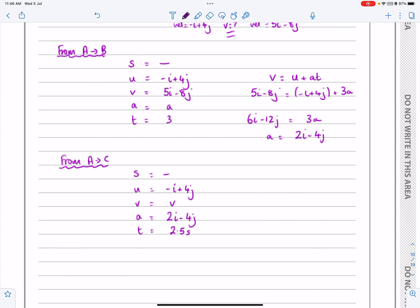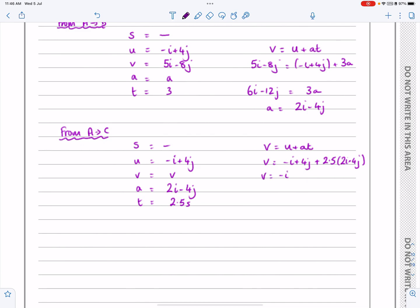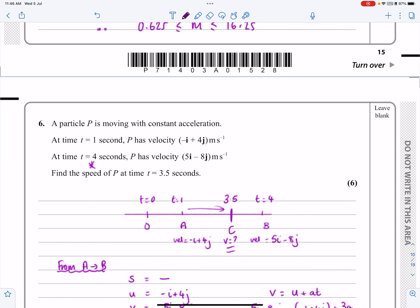This time I'm trying to work out V, still using U, V, A, and T, so it's the same formula. V equals U plus AT. V equals minus i plus 4j plus 2.5 lots of 2i minus 4j. This works out to minus i plus 4j plus 5i minus 10j. So V is 4i minus 6j. That's the velocity at 3.5 seconds.